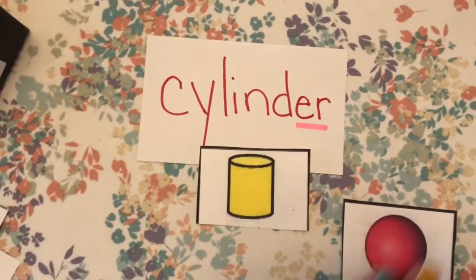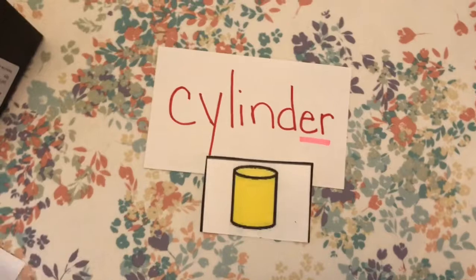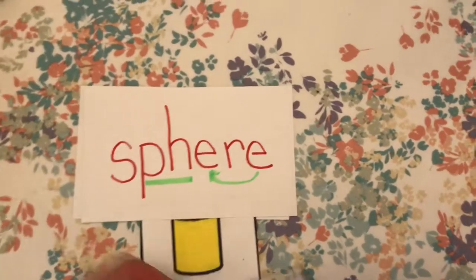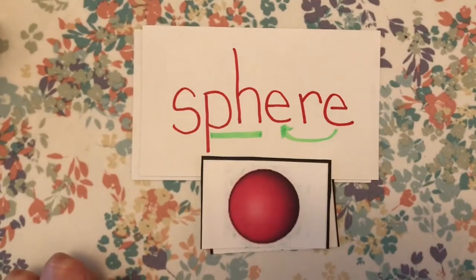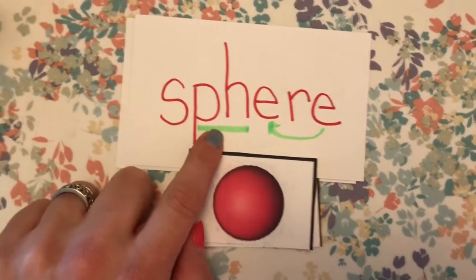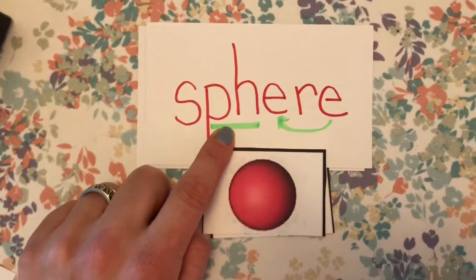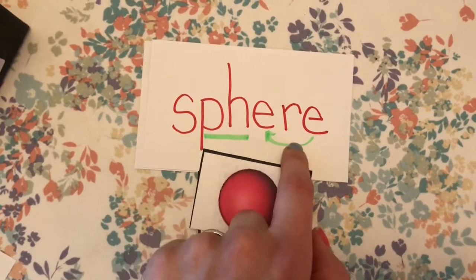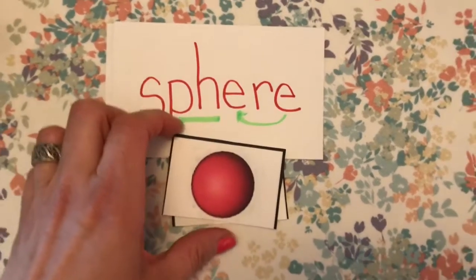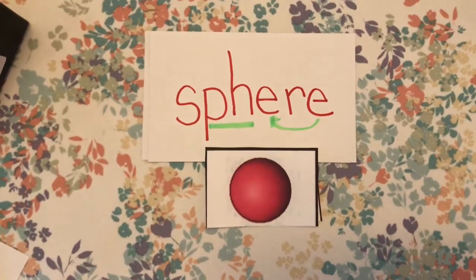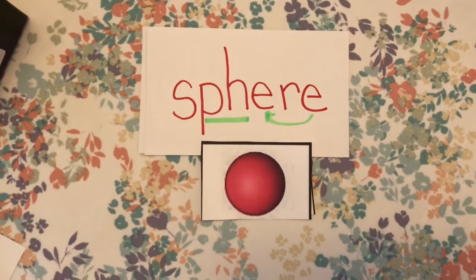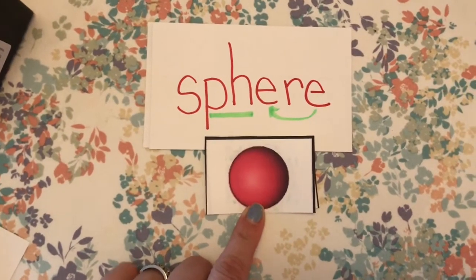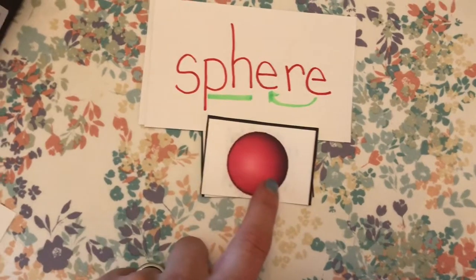The next shape we're going to look at is a sphere. Remember, the PH makes the F sound — S-f-ear, sphere. It's like the word fear but with an S at the beginning. A sphere is the shape of a ball. It's rounded, there are no flat sides — completely round.